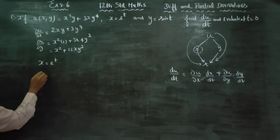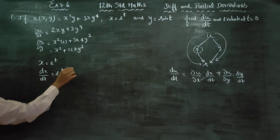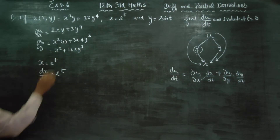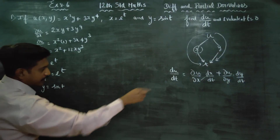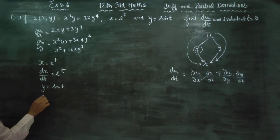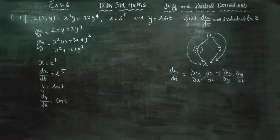∂u/∂x and ∂u/∂y are ready. Now x = e^t, so dx/dt = e^t. Then y = sin(t), so dy/dt = cos(t). Everything is ready.